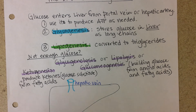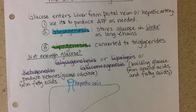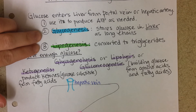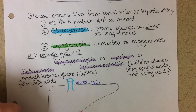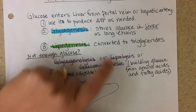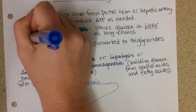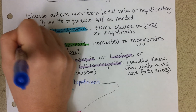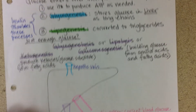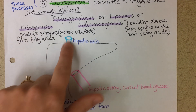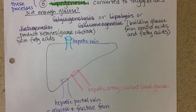Hormones influence this too. Insulin is released from the pancreas when blood sugar gets high. Think about what would make sense: would glycogenesis and lipogenesis decrease blood sugar, or would glycogenolysis, gluconeogenesis, and lipolysis? Insulin stimulates glycogenesis and lipogenesis. This means glucose that came into the liver from food is stopped there and doesn't go back into the bloodstream, which brings blood sugar down.